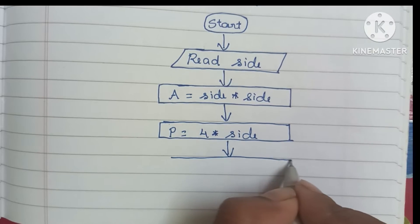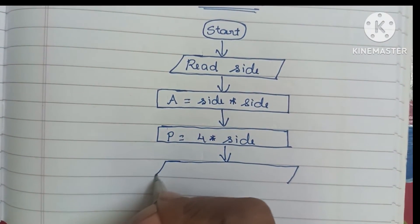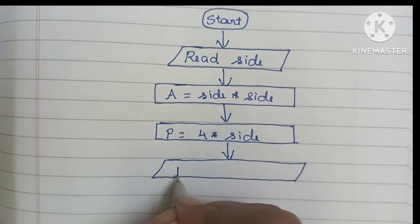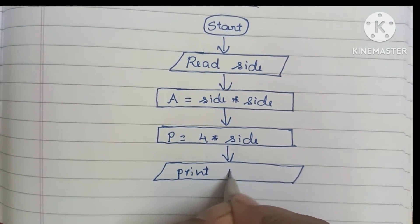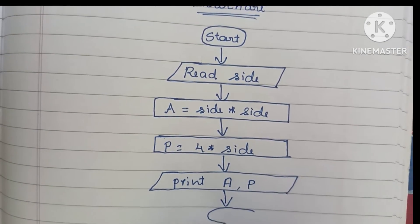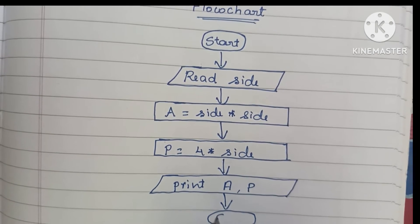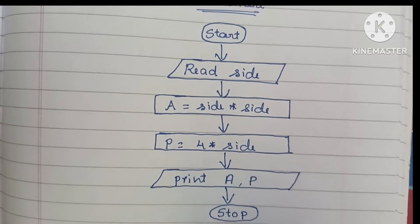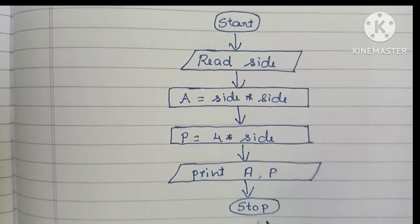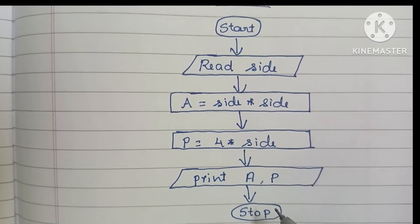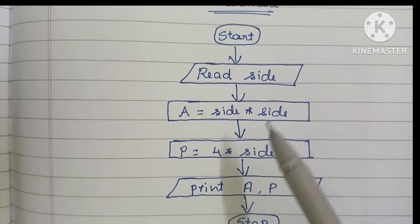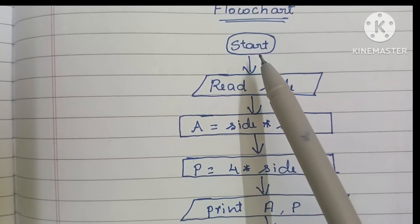Next we have to print the output values. Output values are written within a parallelogram shape, within which we write print A, P. Next we stop the flowchart using the stop statement, written within an oval shape. Start and stop statements are written within oval shapes, input and output values within parallelogram shapes, and calculations within rectangular shapes.